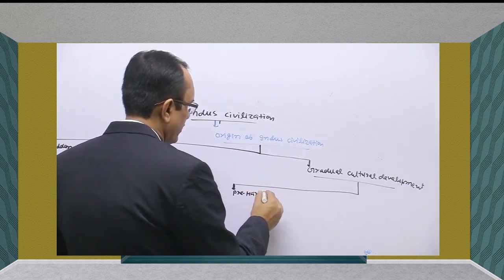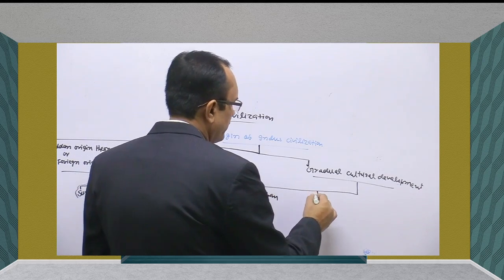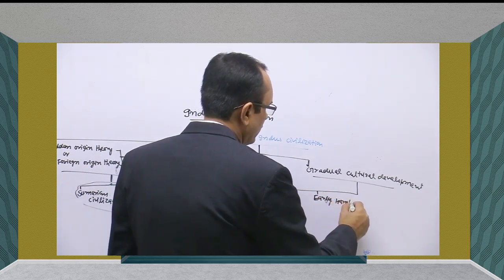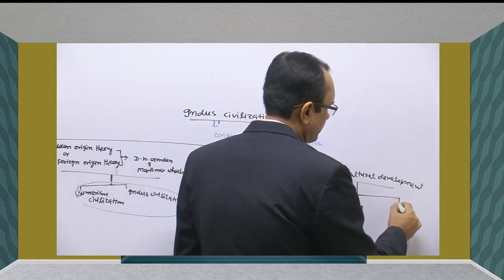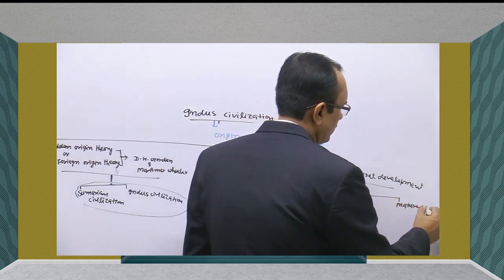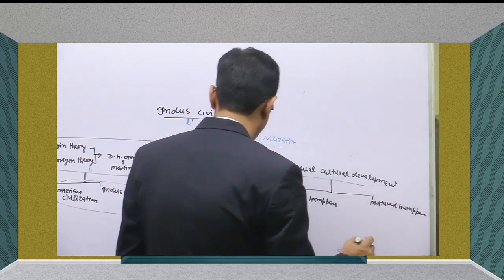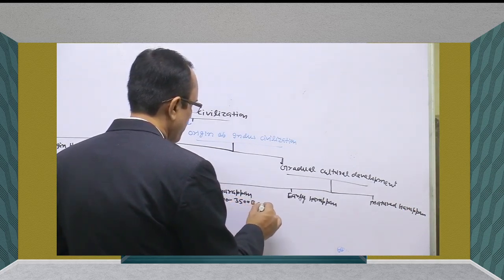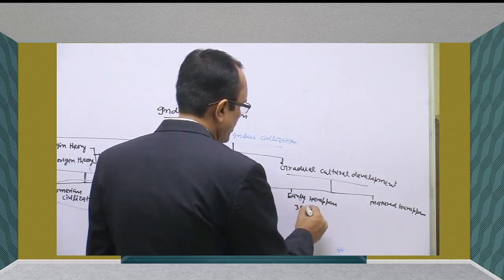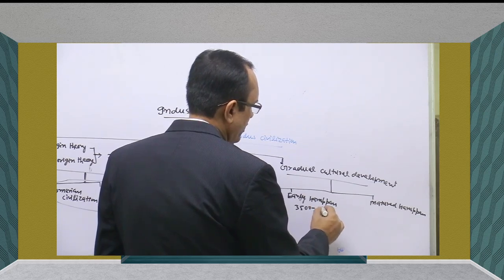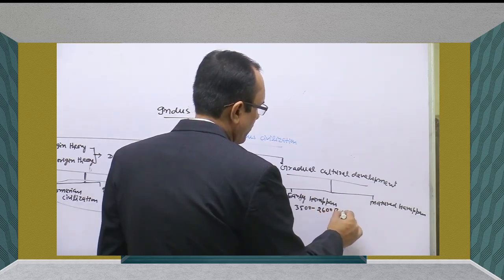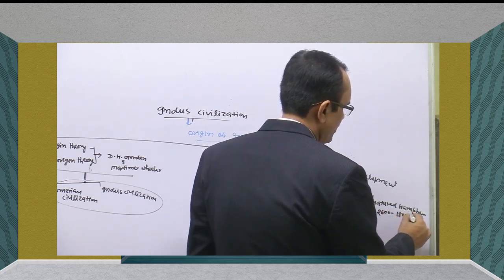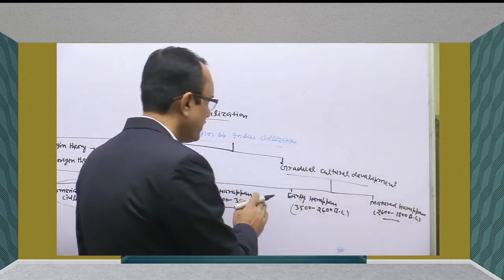The three phases are: Pre-Harappan, Early Harappan, and Mature Harappan. Pre-Harappan developed around 6000 to 3500 BCE, Early Harappan developed between 3500 to 2600 BCE, and Mature Harappan developed from 2600 to 1800 BCE — which we already studied in Chalcolithic culture.